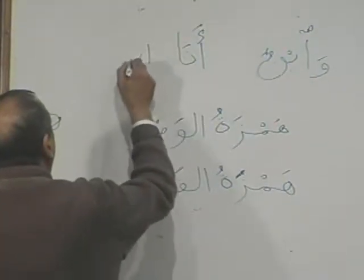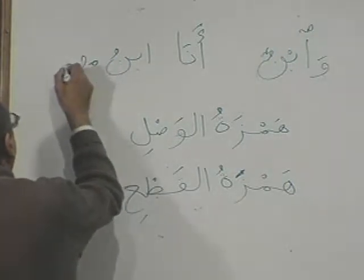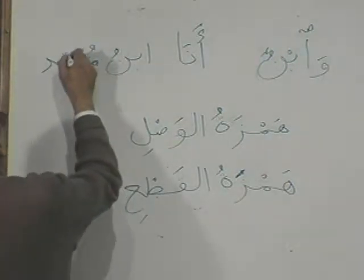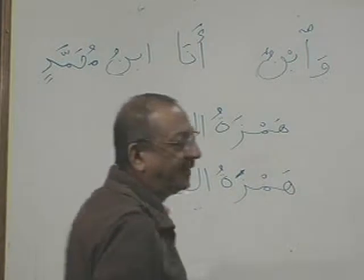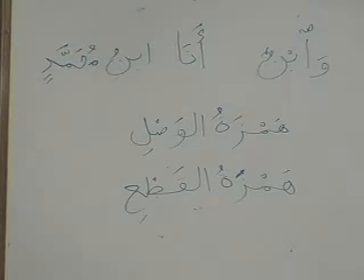For example: Ana ibnu Muhammadan. Ana is mubtada. Where is khabar? Ibnu — wa huwa mudaf. And then mudaf ilahi. But how will I pronounce? Anabnu. Why? Because you have noon with fatah, and after it is Aleph with sukun, and then sukun on the Hamzatul Wasal, so I cannot pronounce two sukkuns.